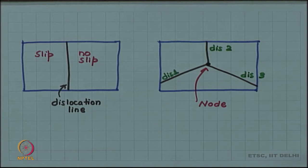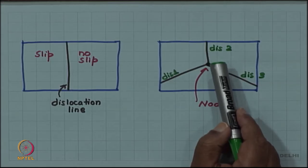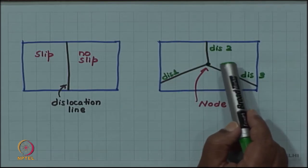Three dislocations are meeting at that node. This dislocation line which is dislocation 1 is starting on a free surface, but it is not ending on a grain boundary, but it is ending on other dislocations.